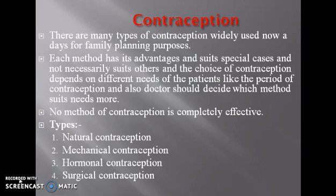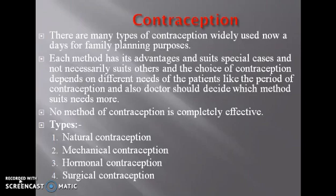There are many types of contraception widely used nowadays for family planning purposes. Each method has its advantages and special cases — not necessarily suitable for all — and the choice of contraception depends on different needs of the patient, the period of contraception, and the doctor who decides which method suits that individual's needs most. No method of contraception is completely effective.